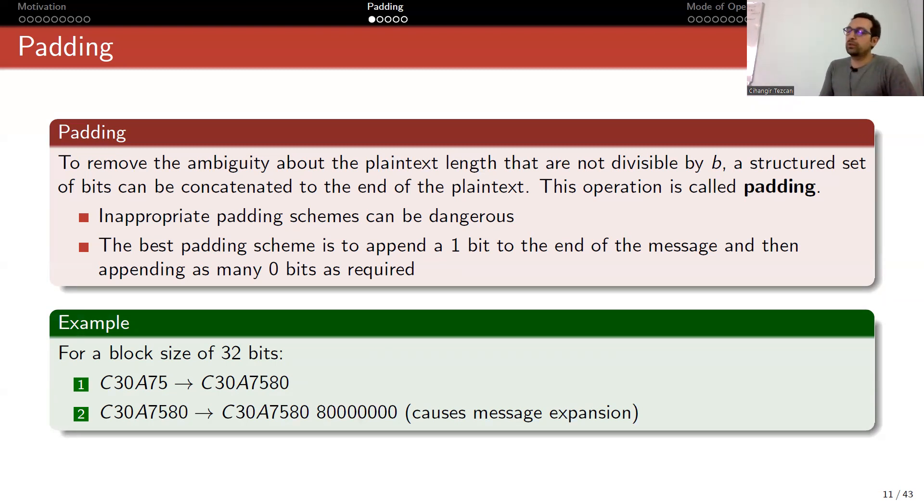So this causes a message expansion. You wanted to send a single block but now you are encrypting and sending two blocks. This is not so much of a problem if you are sending huge files. For instance, if you are sending a one gigabyte file, then adding an extra block doesn't cause that much of a bandwidth problem. Also, for decrypting, if you are decrypting a one gigabyte file, decrypting one block more wouldn't cause a problem.